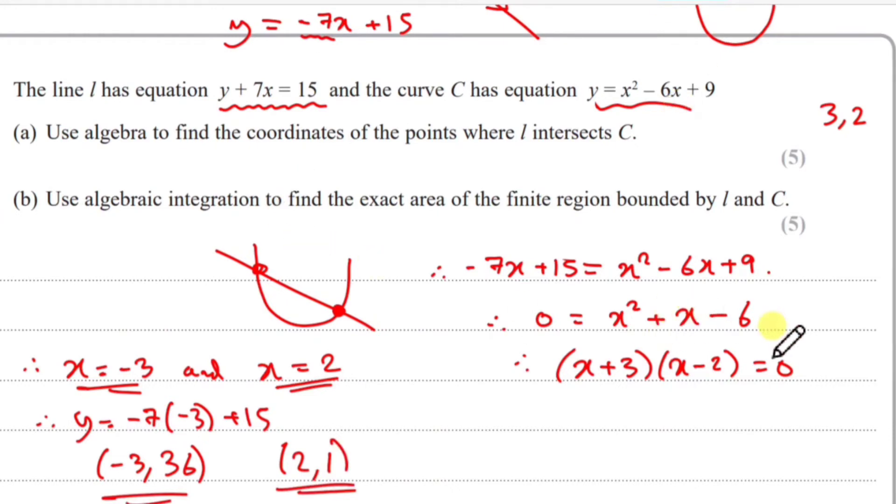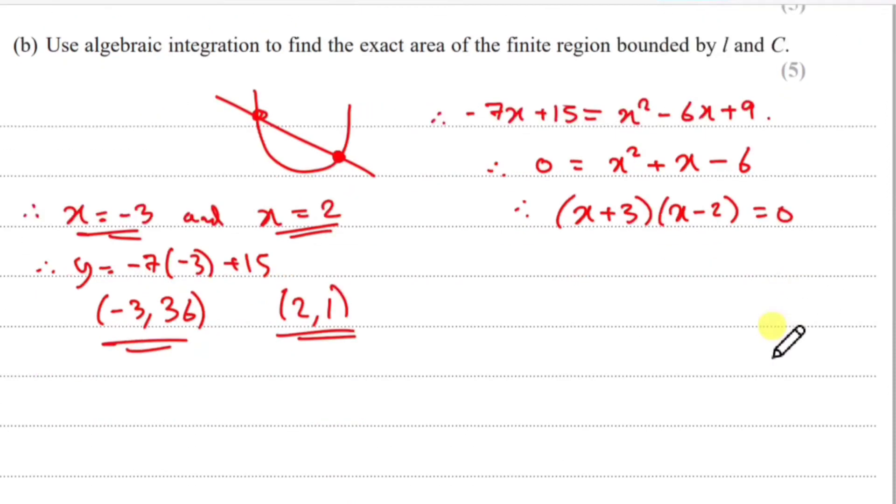Now for part B. Use algebraic integration - we're talking about proper integration now, the opposite of differentiation - to find the exact area of the finite region bounded by L and C.